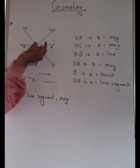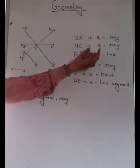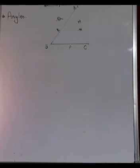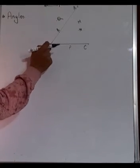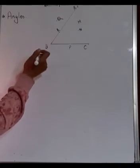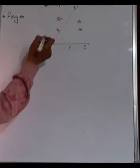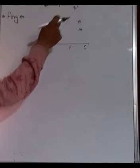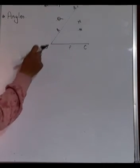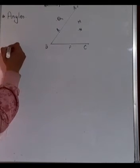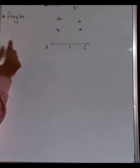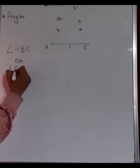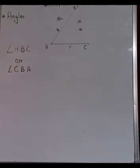These kinds of questions can come where I give you a figure and ask whether OA or HC is a ray, line, or line segment. Next is angles. When two rays meet at a point, they form an angle. I have drawn an angle here. You can name it using the points on the angle — this angle is A, B, C — so you write angle ABC.